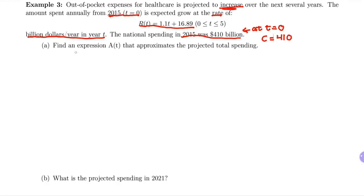So the first part says, find an expression A of T that approximates the projected total spending. So we want to pay attention that these are just different letters. It's still an initial value problem. We still have our same three steps, but we want to be careful of how we label these because normally we go from F prime to F, or with the Amazon one, we went from N prime to N. But this one, we're going to go from R, and the total is A, so just different naming.